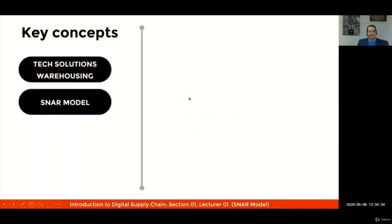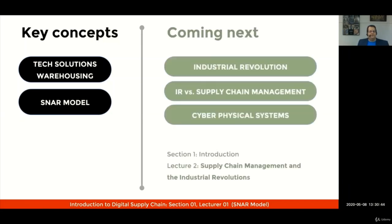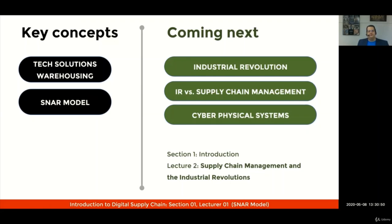In this lecture, we've been through some tech solutions that may impact warehousing operations, and you've learned about the Supply Network Alignment Reference Model. In lecture number two, we'll go through the concepts of industrial revolutions, how they have affected supply chain management, and you will understand the concept of cyber physical systems. Thank you so much.